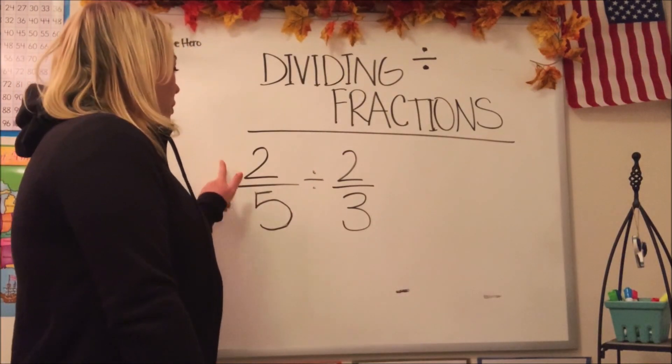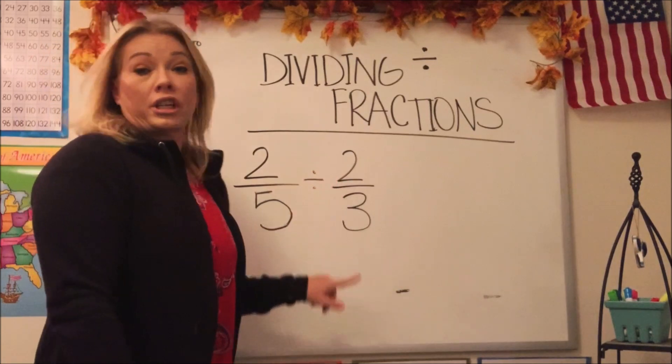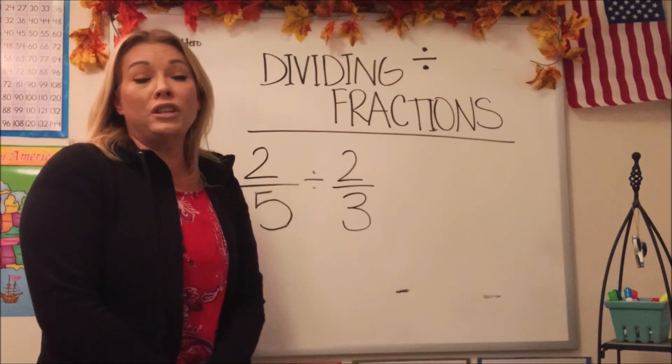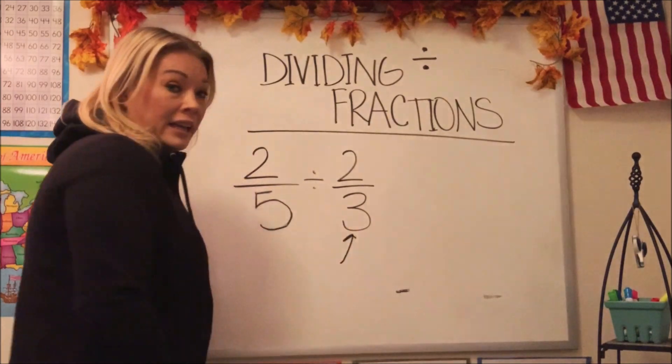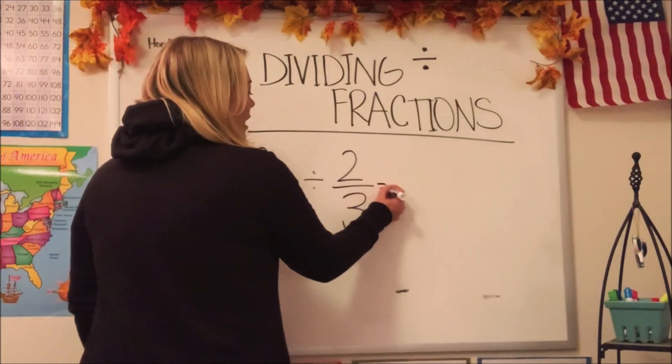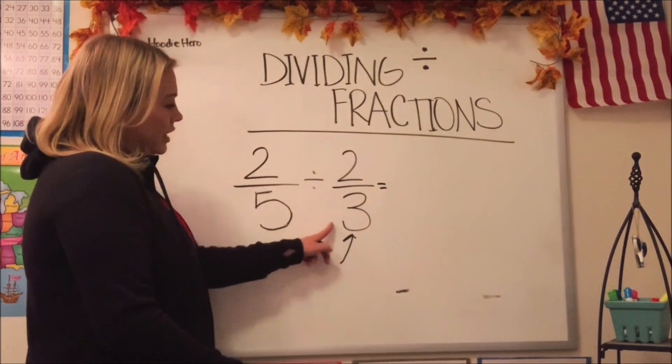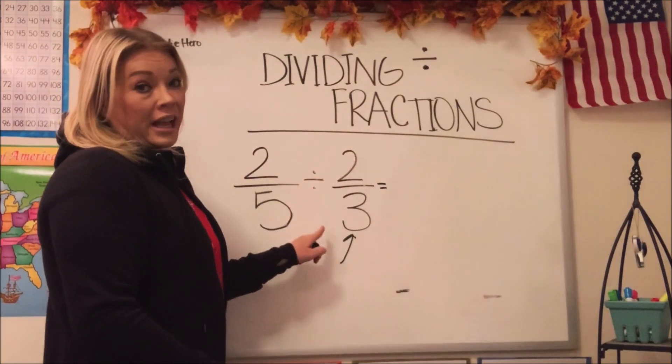So we have two fractions up here, two-fifths divided by two-thirds. Now when we do division with fractions, our focus is going to be on the second fraction. What we're going to do is rewrite the equation for us, but we're going to flip or invert the second fraction.